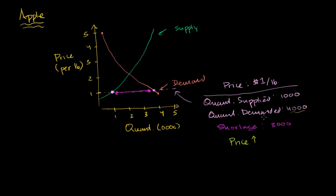As prices get bid up, the producers are going to say there's so many people, we're running out of apples, we need to increase the quantity produced. So the quantity will also go up. From the supplier's point of view, the price will go up and the quantity will go up — they will move along the supply line. Maybe in the next period the price goes to $2 and quantity goes to about 1,900 pounds, so there's less of a shortage.